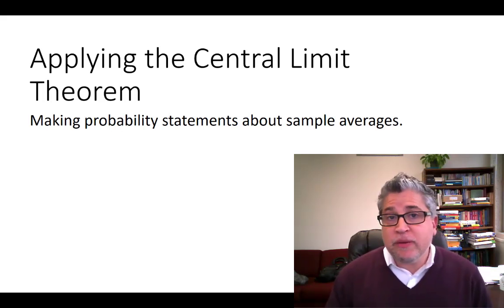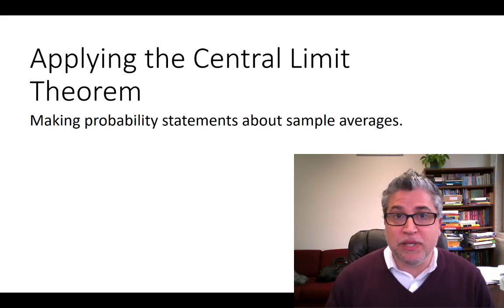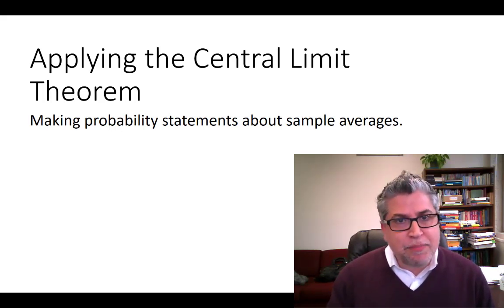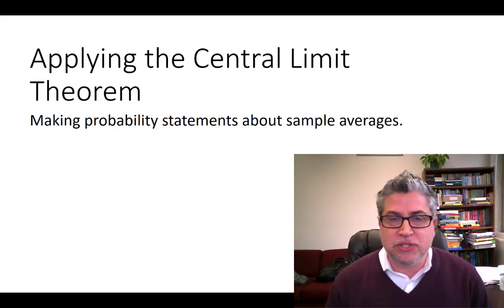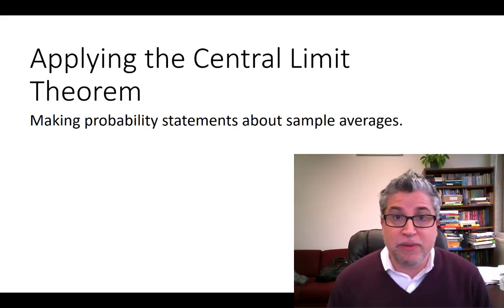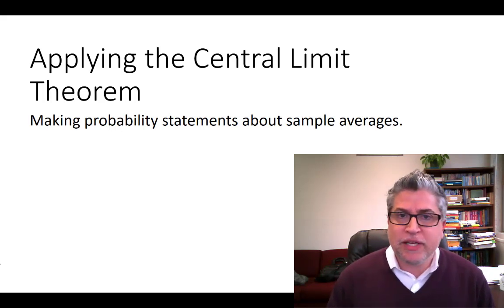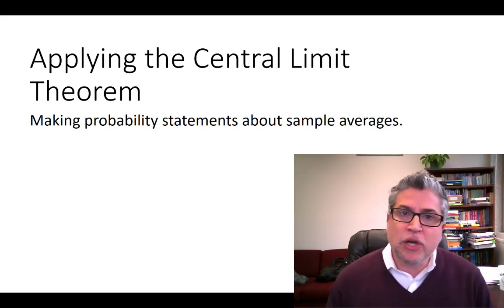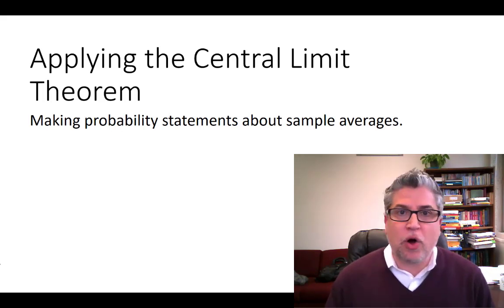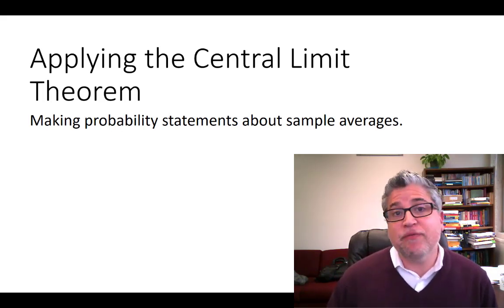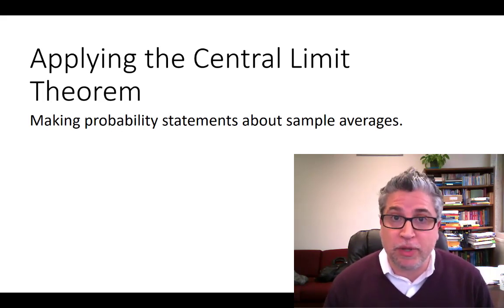Now like all random variables, it has a probability distribution. And what the central limit theorem says is your sample average has a normal distribution. It doesn't matter what the parent population's distribution was. It could have been U-shaped, it could be skewed, it could be binary, but whatever that distribution is, as long as your sample size is large enough, the range of all the sample averages you might have taken from that will be distributed normally.